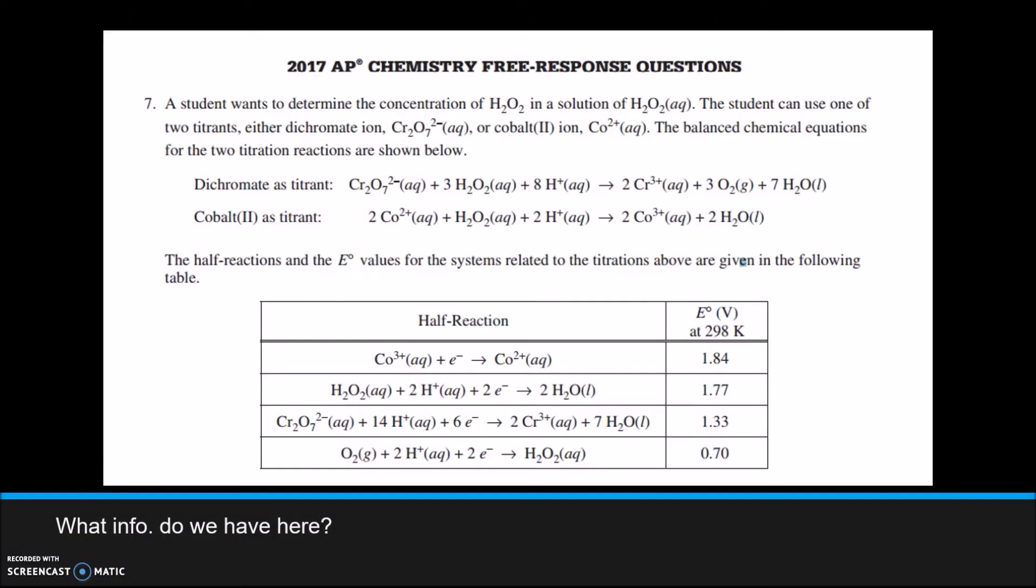So let's get started. This question is going to deal with two reactions, both dealing with titrations. The first one we're going to have dichromate as a titrant, and the second one we're going to have cobalt with a charge of 2 plus as a titrant. And then it's also going to show us the half reactions that make up those two reactions and their E⁰ values at 298 Kelvin.